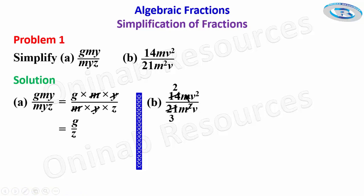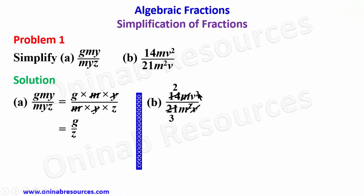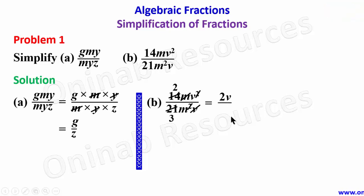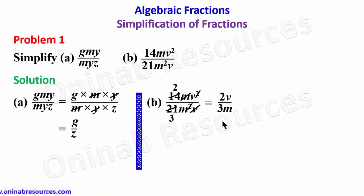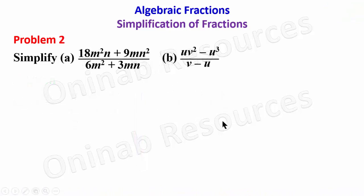For the variables: m squared is m times m, so one m cancels with the m in the numerator, leaving one m in the denominator. For v: v squared in the numerator is v times v, and one v cancels with the v in the denominator, leaving one v in the numerator. So the result is 2v over 3m.